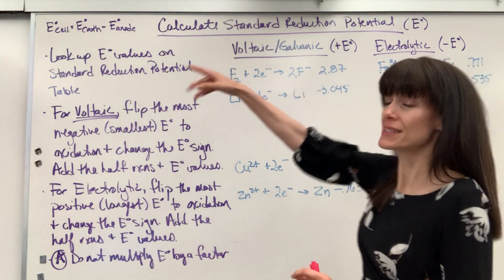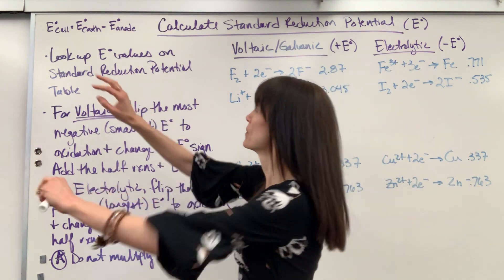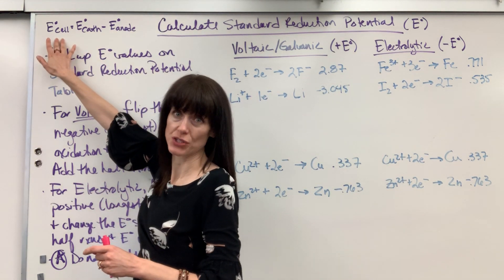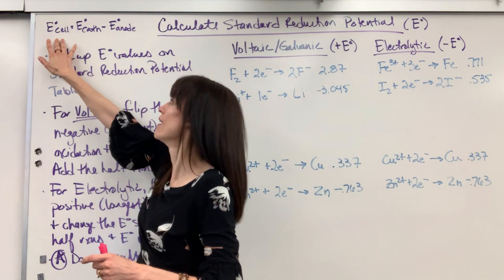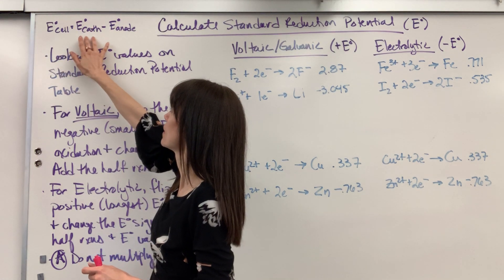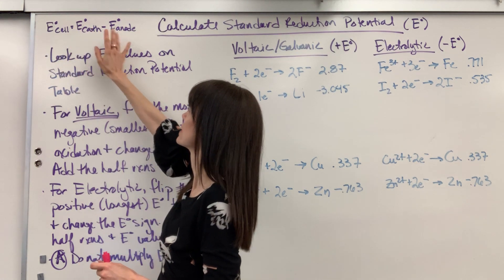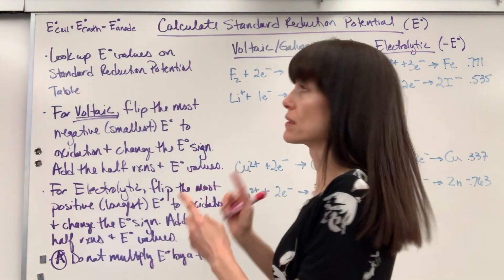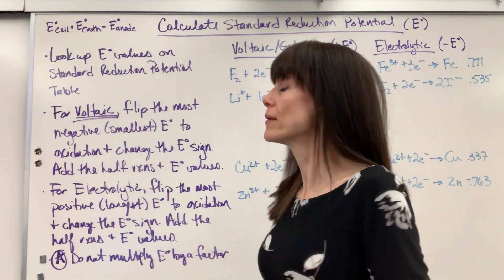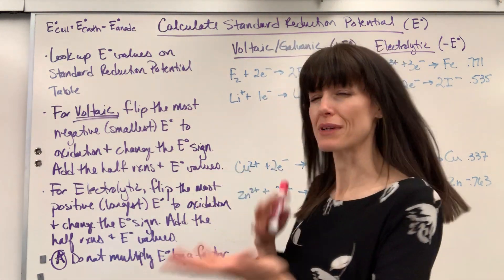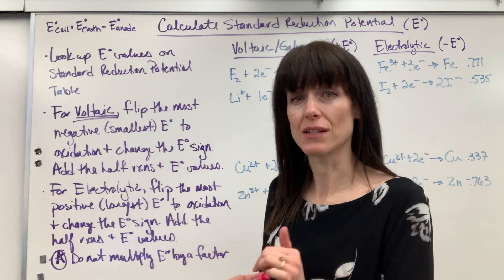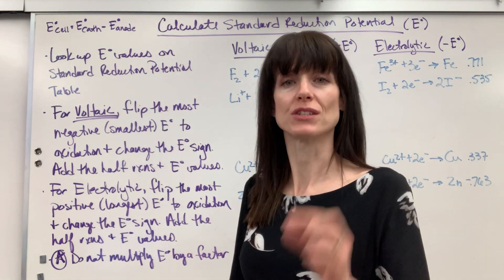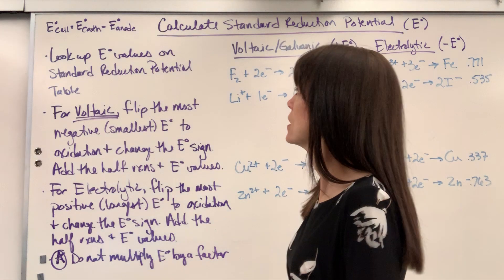So this is what you'll see in your textbook. It will say to find the total standard reduction potential for a cell, you take the potential of the cathode minus the potential of the anode. I'll be honest, I found that that really confuses students. So I'm going to reframe that and show you a little bit easier way to do it. It's the same thing, just looking at it from a different perspective.